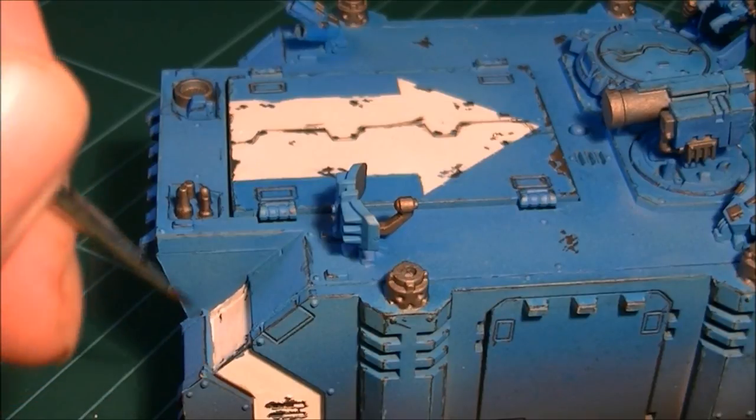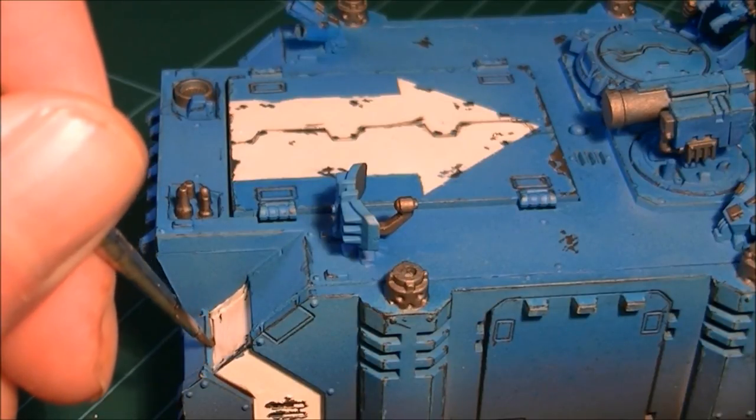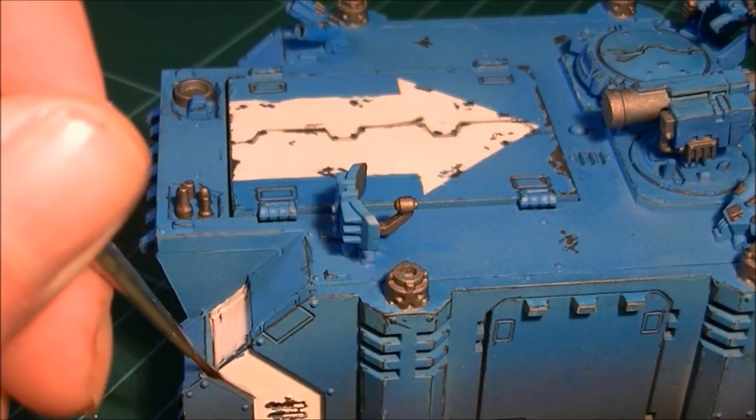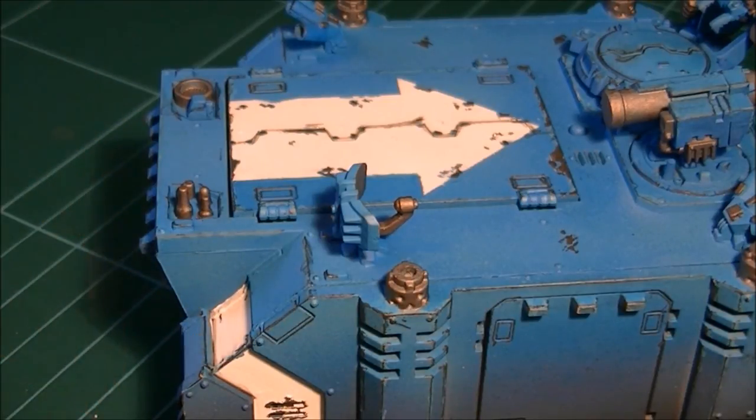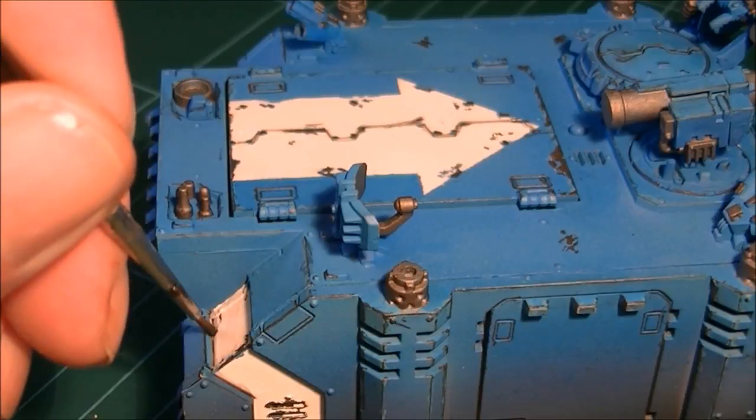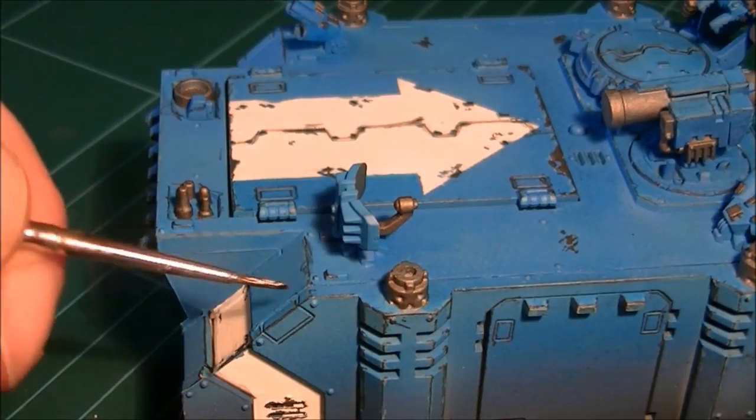Next up is panel lining. I'm going to go around the whole tank with Nuln Oil and basically just run a small bead into all the crevices around all the panels. As you can see it's starting to come along now.